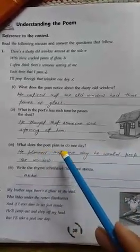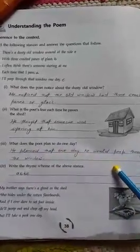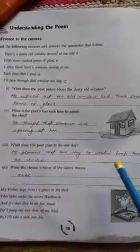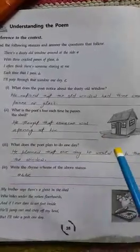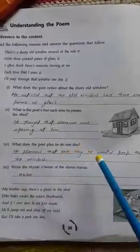What does the poet plan to do one day? He planned that one day he would peep through the window. He would definitely one day peep through the window.